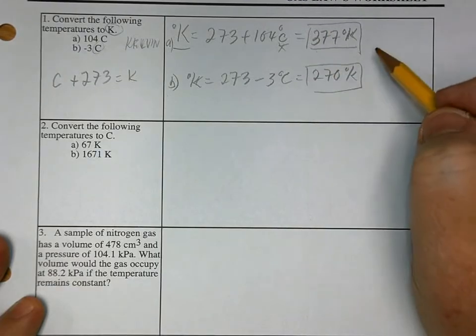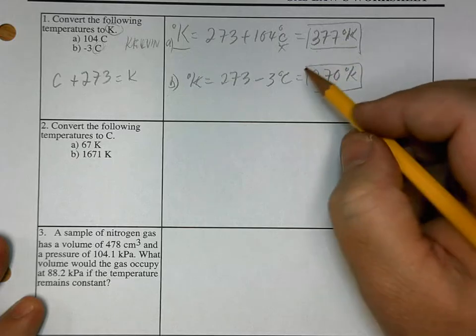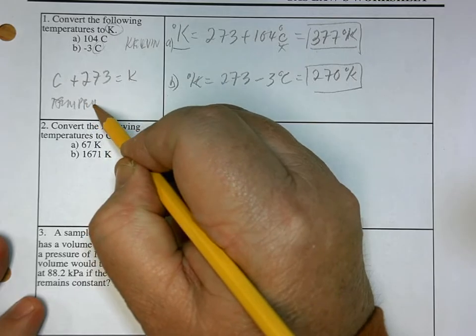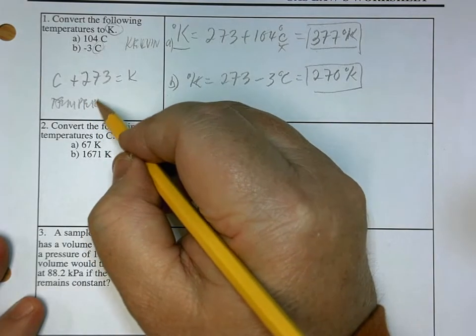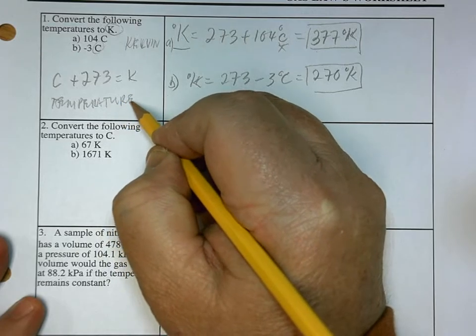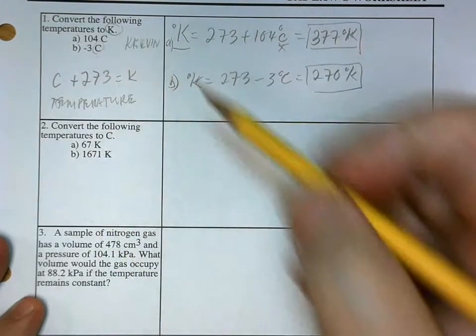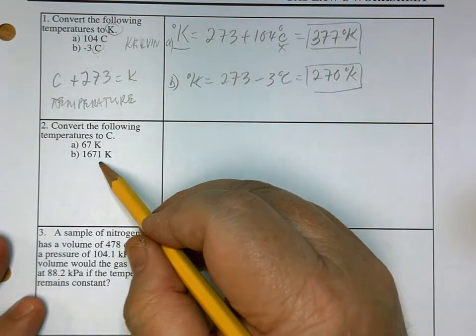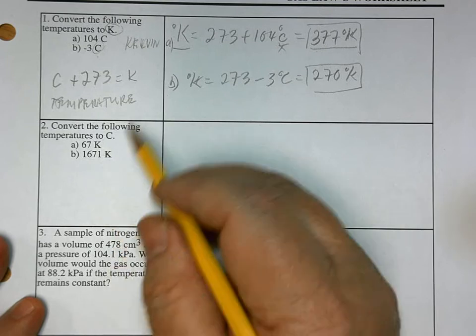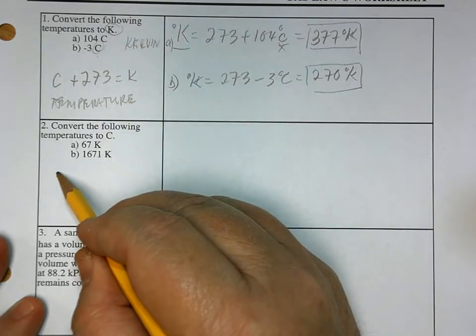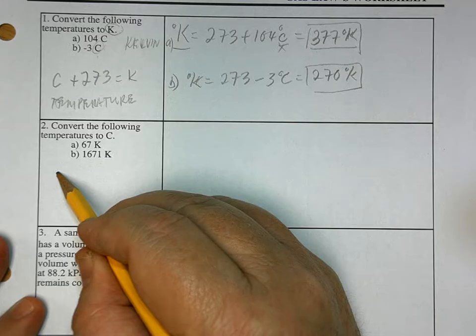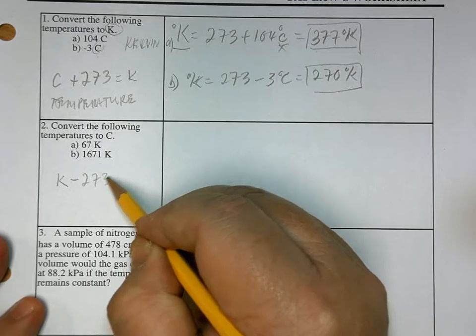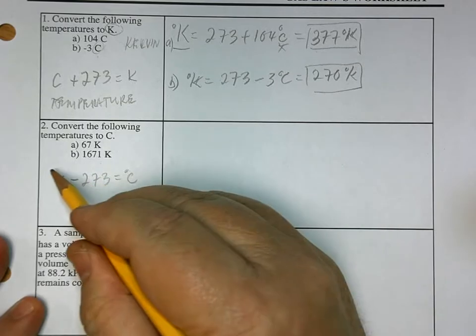And again, you have to convert temperature always. And this is, in case you didn't know, this is temperature. That's another skill that you have to know. You have to be able to identify, based on the units, whether it's temperature, pressure, or volume. So here, the opposite. So how do you do that? Well, you have to subtract. So it's K minus 273 is equal to C, that's your formula.